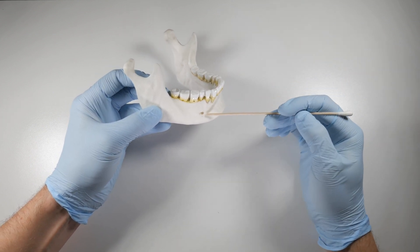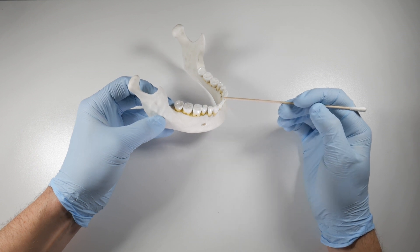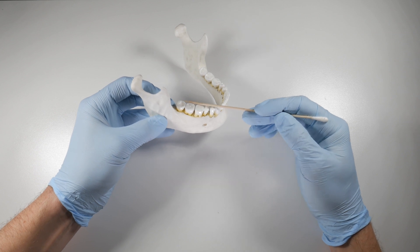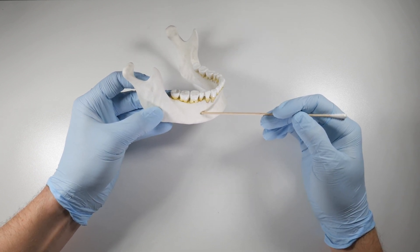The inferior alveolar nerve continues forwards as the incisive nerve to give innervation to your premolars all the way up to your central incisors. It also innervates the molar teeth. The inferior alveolar nerve innervates the molars.